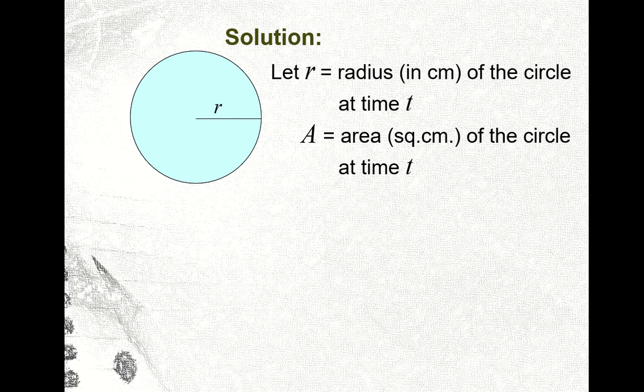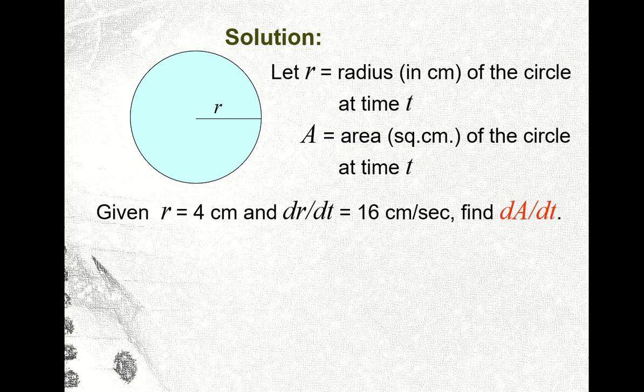Okay, and then using the steps in solving the problem, so we let r be the radius in terms of centimeter, as mentioned in the problem, the unit is in centimeter. So radius in centimeter of a circle at time t. Then A is the area in terms of square centimeter. So area of the circle at time t.